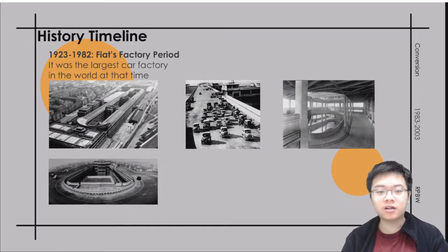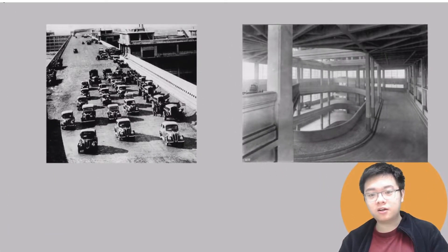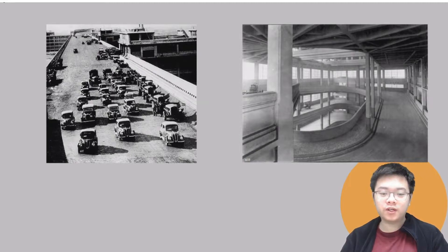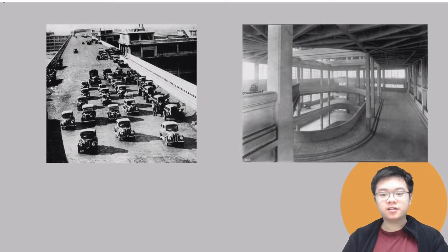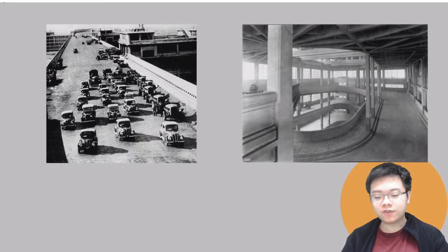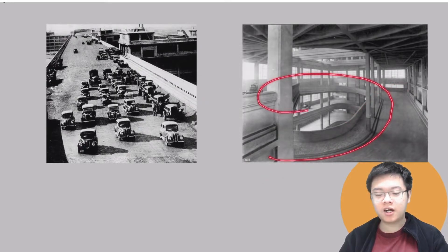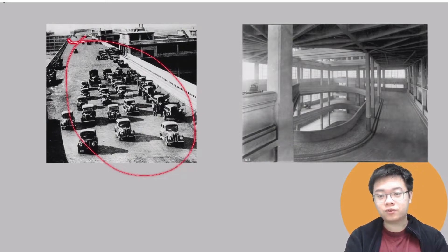This building was for Fiat, one of the most important and famous car corporations then and even nowadays. This was one of their production factories during 1923 to 1982. You can clearly see this is a car factory. After production was done, cars could be tested on the roof because there is a car track there. This interior photo shows the ramp used for cars to reach the roof, where they could then test the products to ensure they worked.